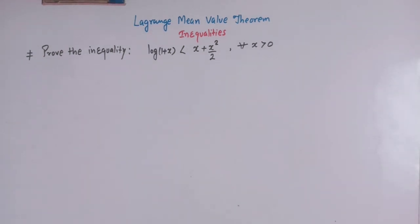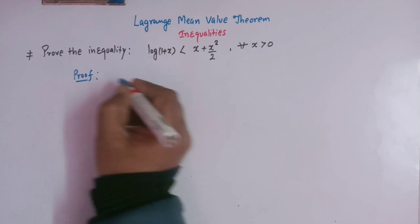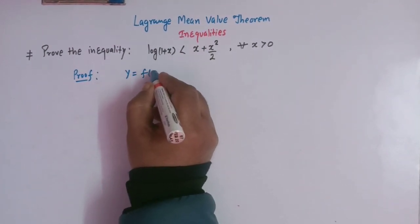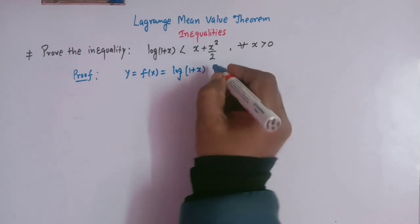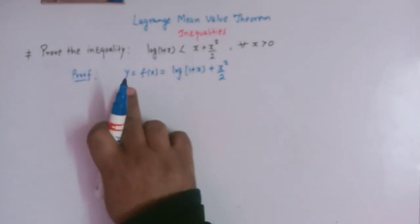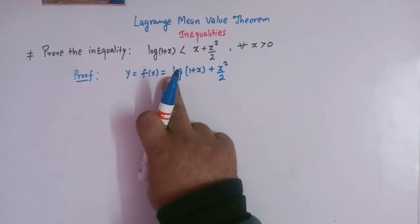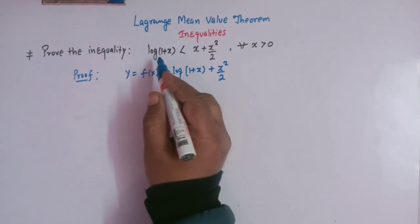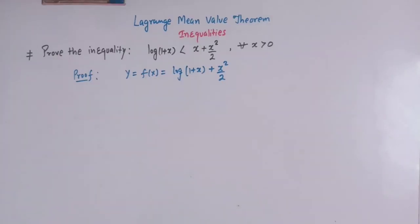To prove this inequality, let us first assume an appropriate function. We'll take a function f(x) equal to log of (1 + x) plus x squared over 2. Here this log is the natural log, so the base of this logarithm is e, which is the exponential number.